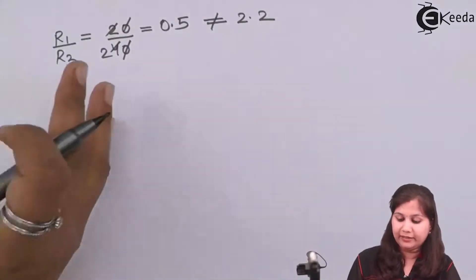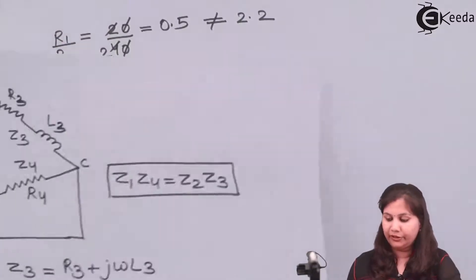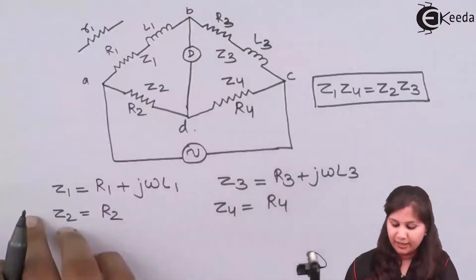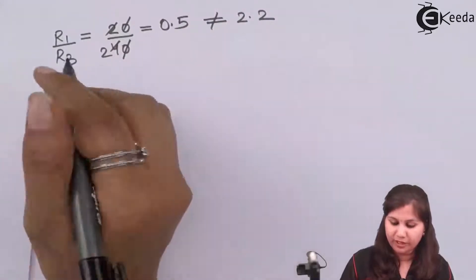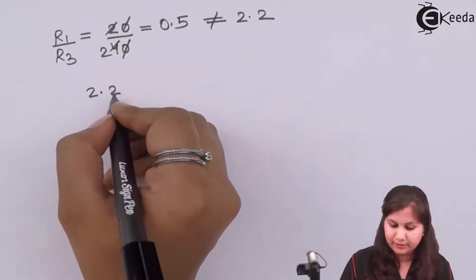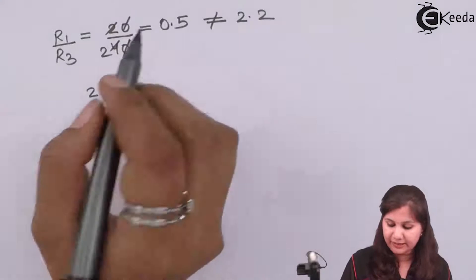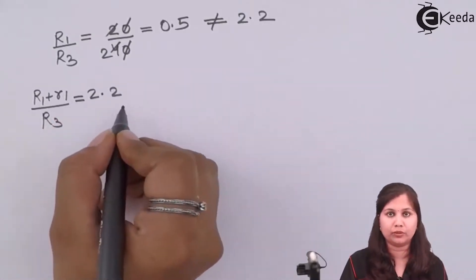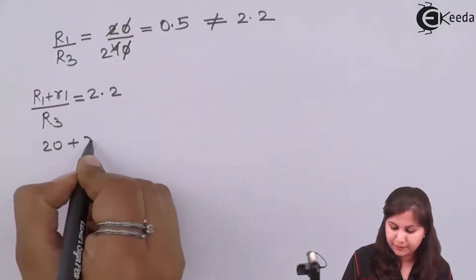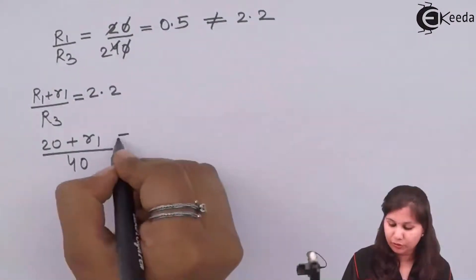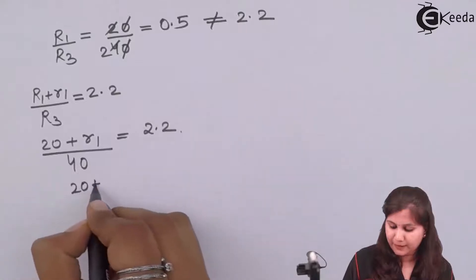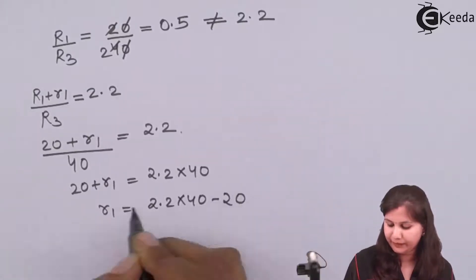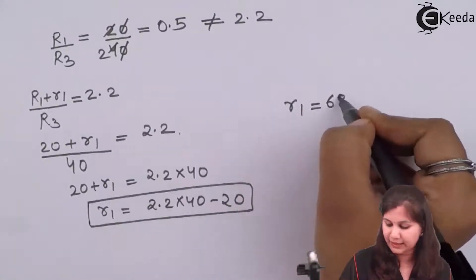So it means that in series with resistance R1 in the circuit we have to connect an additional small resistance r1 to compensate for this value. The condition becomes: (R1 + r1)/R3 = 2.2. Substituting: (20 + r1)/40 = 2.2, so 20 + r1 = 2.2 × 40 = 88, therefore r1 = 88 − 20 = 68 Ohms.